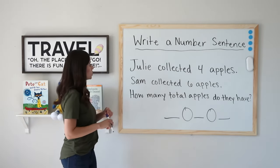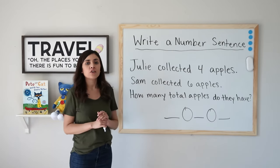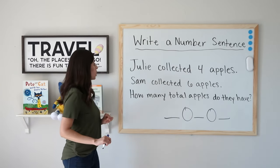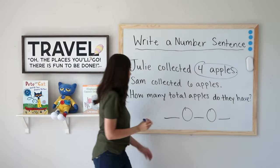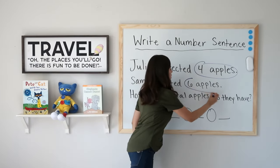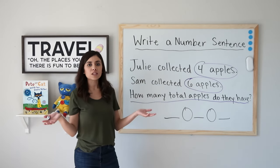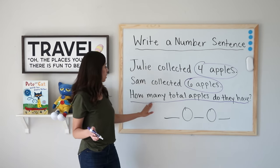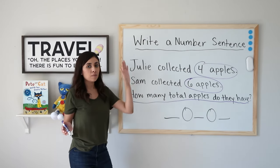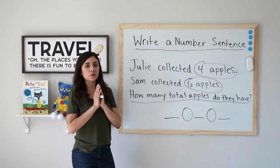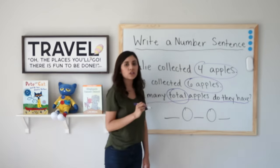This problem says: Julie collected four apples, Sam collected six apples. How many total apples do they have? Remember, the first thing we want to do is circle what we already know. Julie collected four apples, Sam collected six. I want to know how many total apples do they have. I don't see the words "in all," so let's go back and look at our question. There is a clue word in here — who knows what that word is? If you said "total," you are correct. Total is another word that means to add.